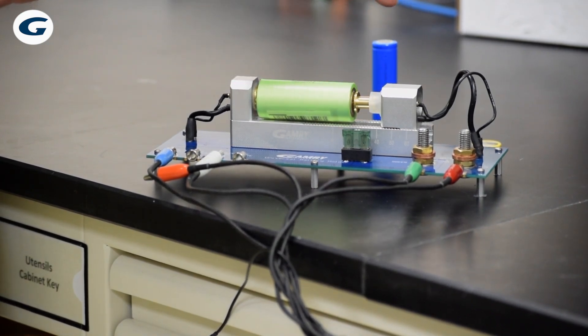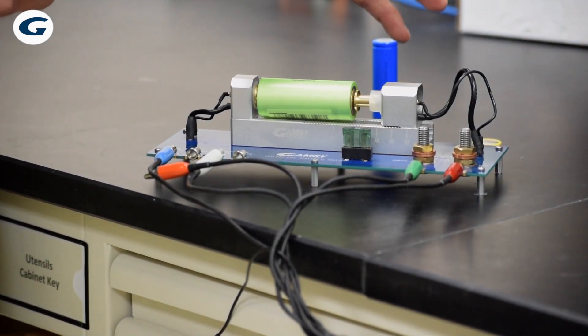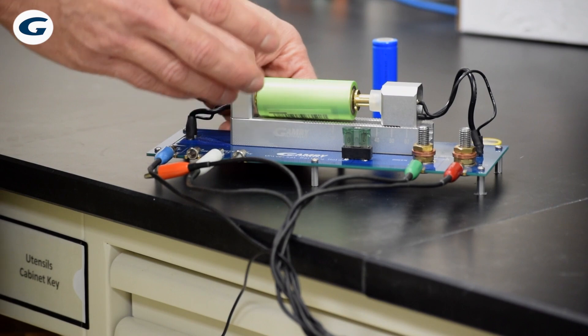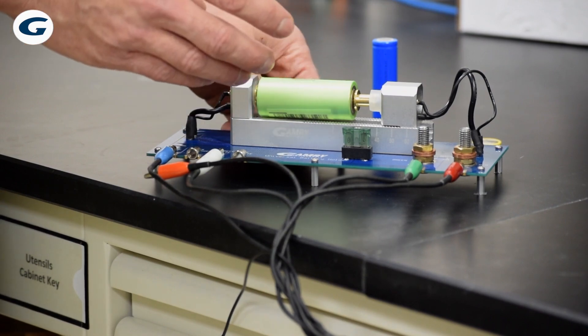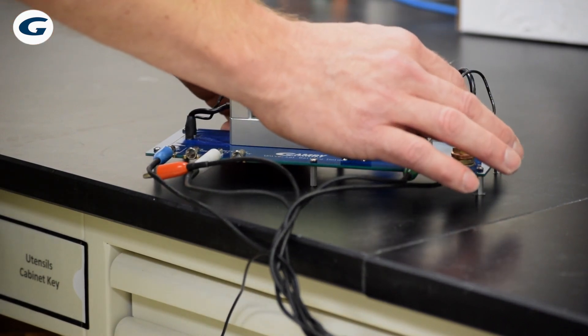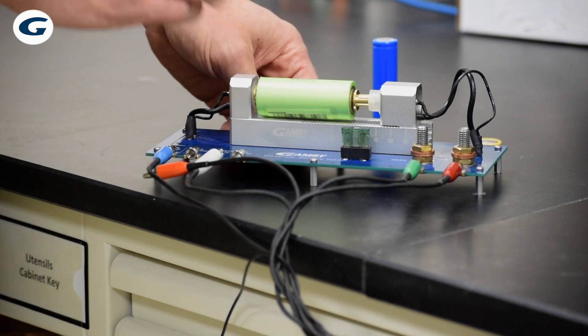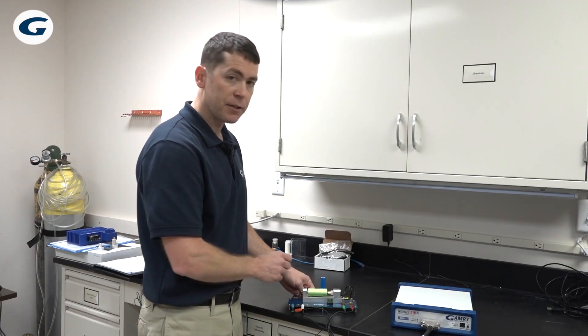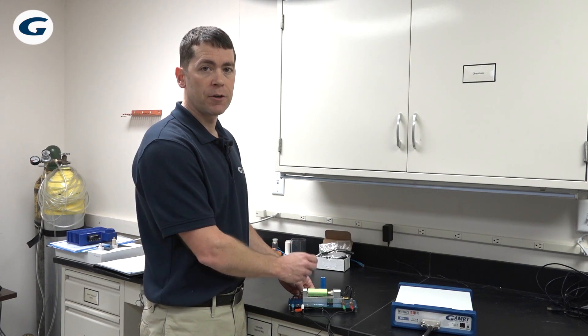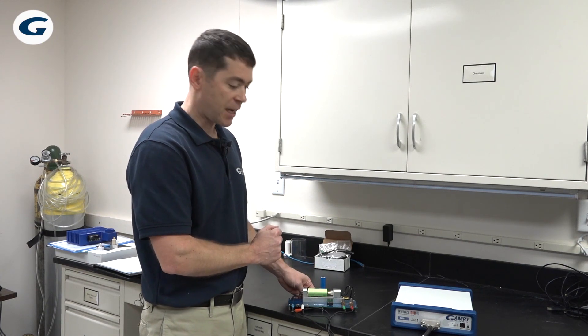This Universal Battery Holder is a four terminal battery holder so you have separate sense and current carrying connections. It can hook up to any Gammary Potentiostat including the reference 30k booster so there's large connections that you can run up to 30 amps through this Universal Battery Holder. It's fuse protected with a 35 amp automotive fuse. It's easy to replace if something should happen.